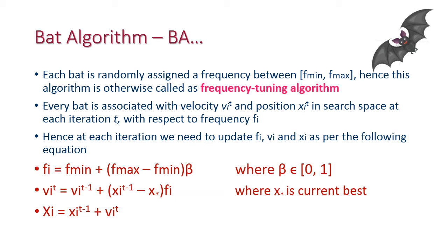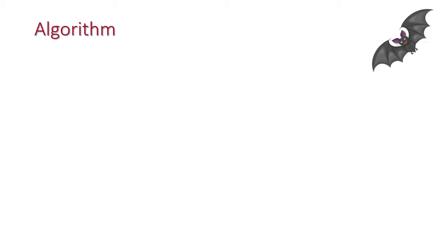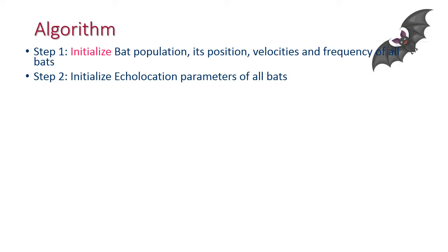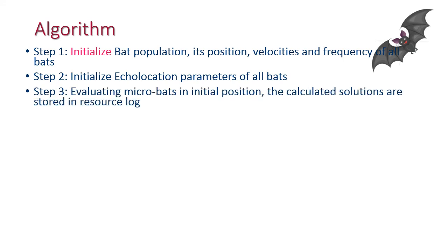This is the very basic general form of bat algorithm. Step one: initialize bat population, its position, velocity, and frequency of all bats. Next, initialize echolocation parameters of all bats. In initial position, the calculated solutions are stored in a resource log, sorting the current bat population in descending order.